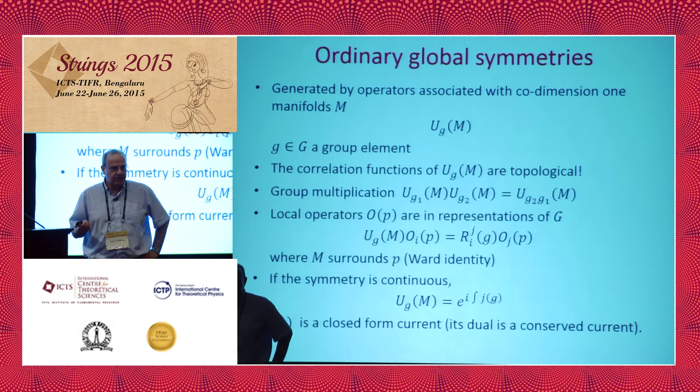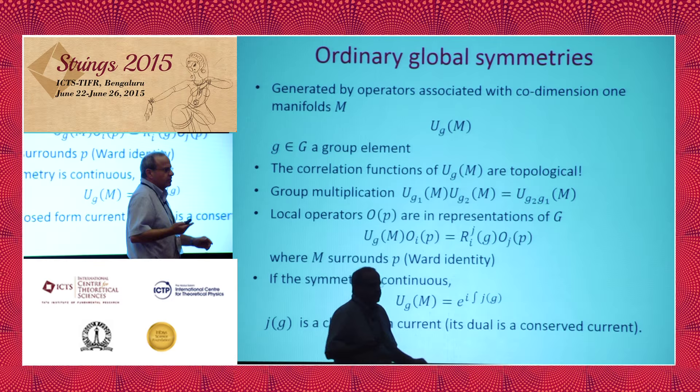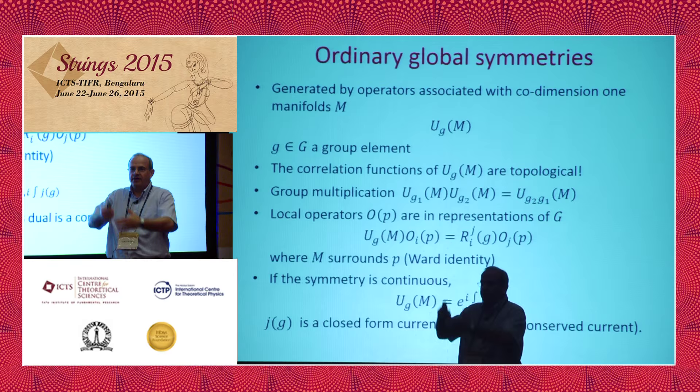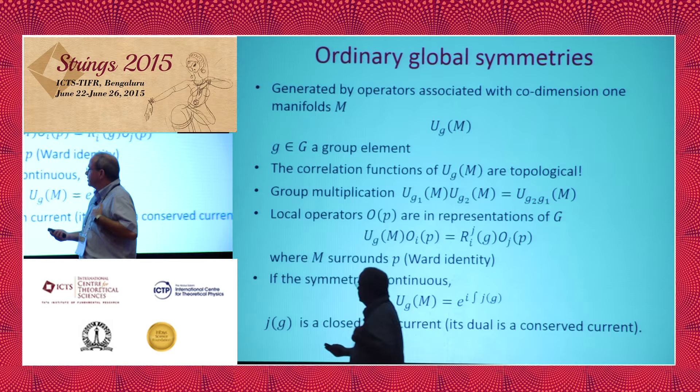If the symmetry is continuous, we can give another presentation of U in terms of a local current J — we put e to the i, an integral over the manifold M of the local current. But if the symmetry is discrete, we do not have such an integral representation, but the operator U does exist. This might look like a rather strange way of presenting what symmetry means, but this is the one that makes it easy to generalize to extended objects, because usually when I learned about symmetries associated with extended objects, they were not discussed as symmetries.